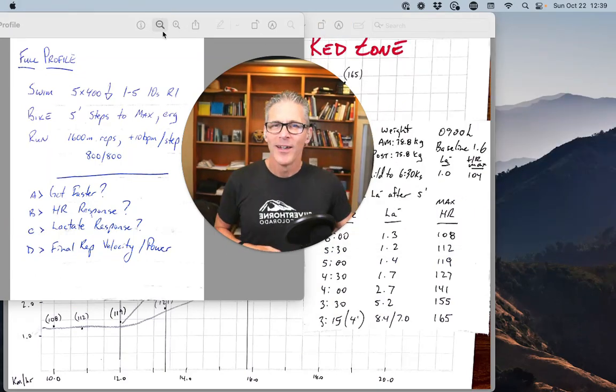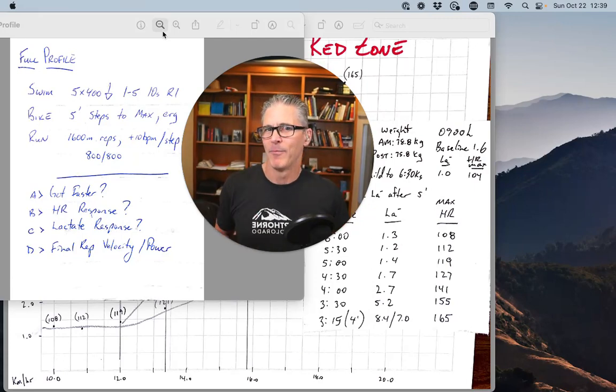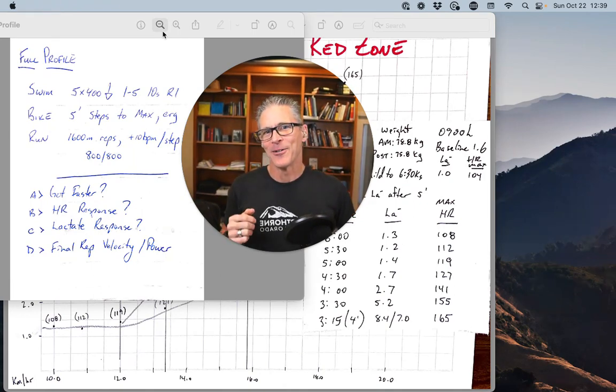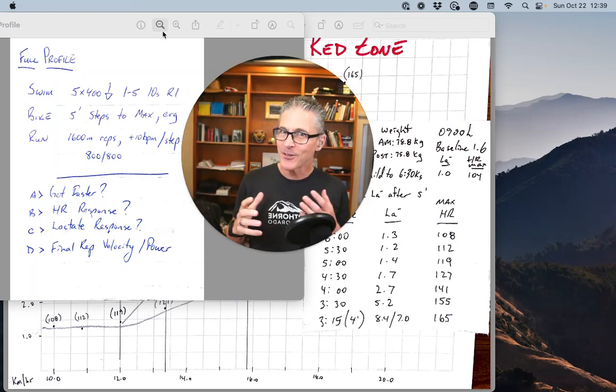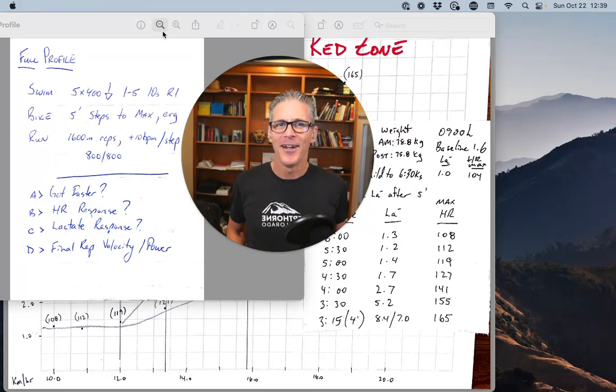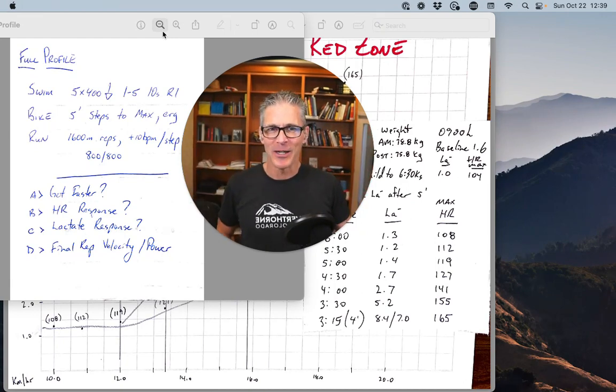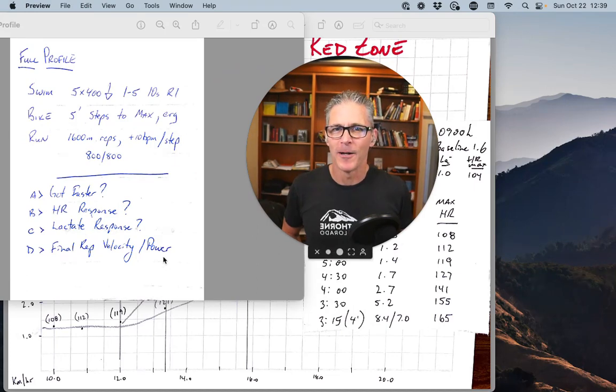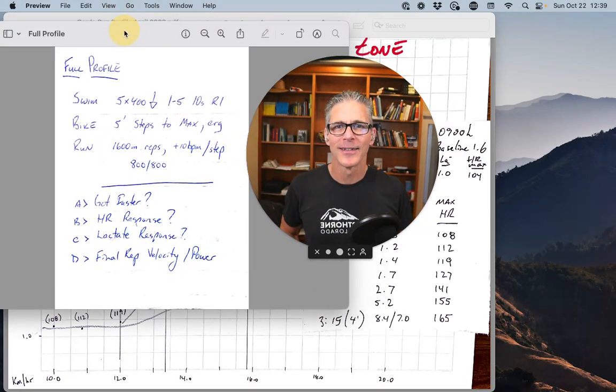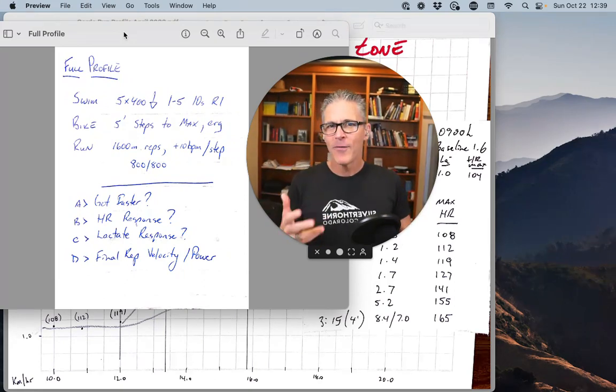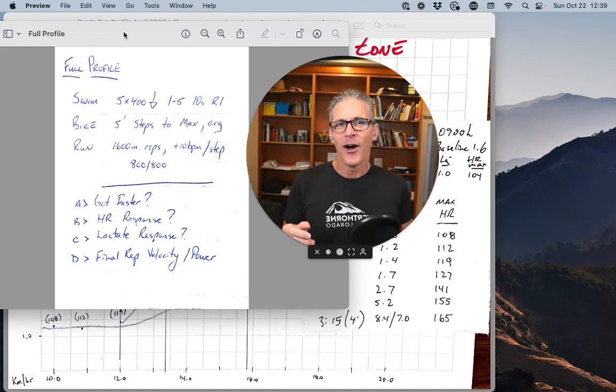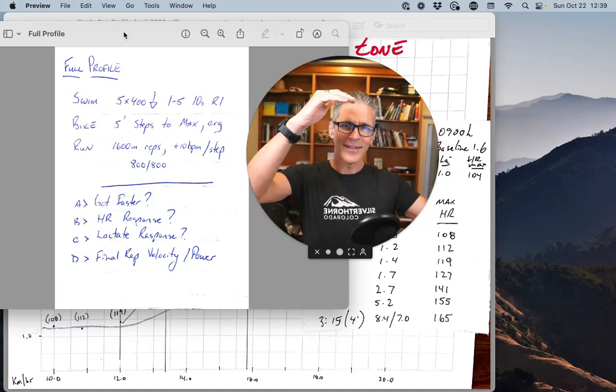Okay, so full profile. The first step before you launch yourself into a cycle of red zone training, or a really intensity-based block where you're still going to be doing plenty of green zone training but you're focused on trying to raise the roof, so to speak, is understanding your full profile. We mean you do a progressive step test. For swimming, it might be something like 5 by 400, descend 1 to 5 on 10 seconds rest. It's a continuous effort and you're going to be stepping up the effort each time.